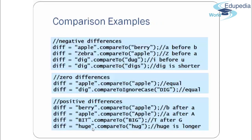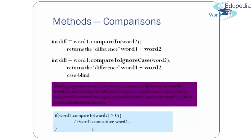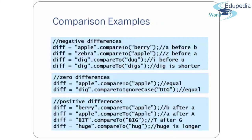For example, comparing "apple" to "berry" — since 'a' comes before 'b', the result is negative. Comparing "zebra" gives negative values when the first string's character comes before the other. For "dig" vs "digs", "dig" is shorter, so the comparison gives a negative difference. When the first string's character comes after the other alphabetically, the result is positive.